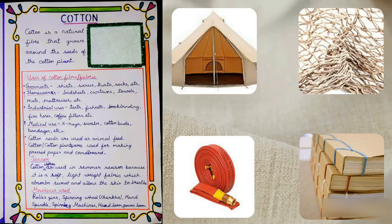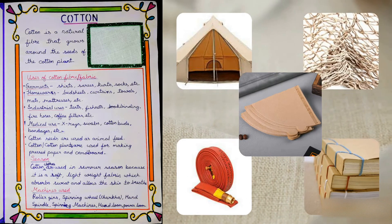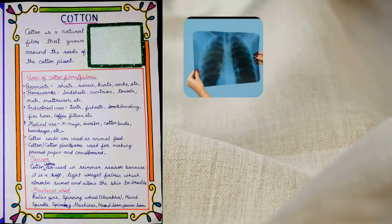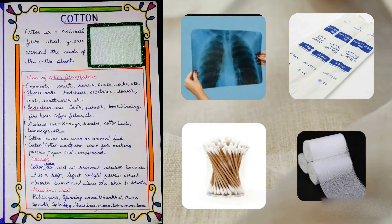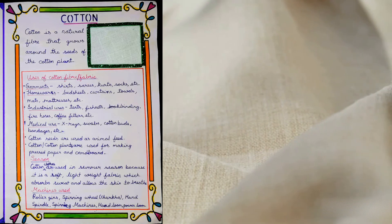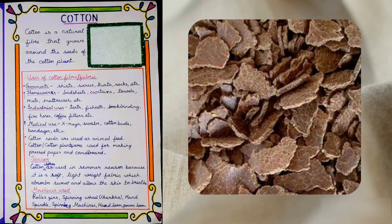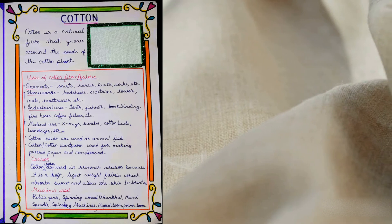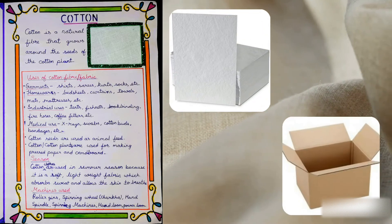Industrial uses also include fire hoses and coffee filters. For medical use, cotton is used for X-ray swabs, cotton buds, and bandages. Cotton seeds are used as animal feed, and cotton plants are used for making pressed paper and cardboard.